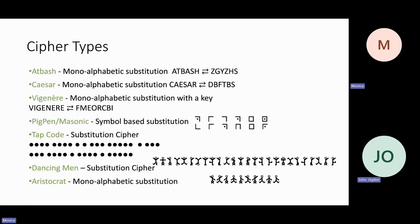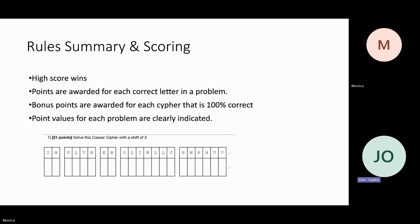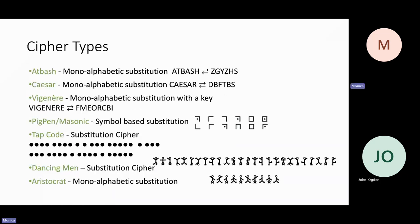On the point system — looking at the 21-point example — some portion of those 21 points is the completion bonus, and the rest is divided across the individual letters, so each letter is worth one point and the rest is the bonus. This year we added another cipher, so if you did it last year as the trial event, there is one additional one to learn. The ciphers are Atbash, Caesar, Vigenere, Pigpen (sometimes called Masonic), Tap Code, Dancing Men, and Aristocrat.